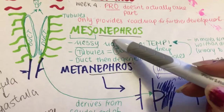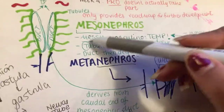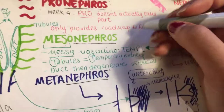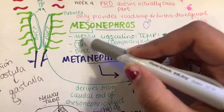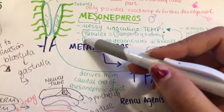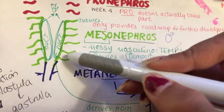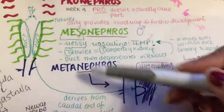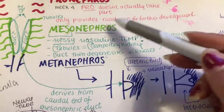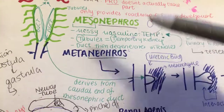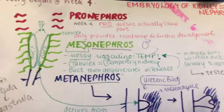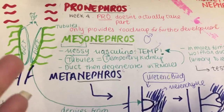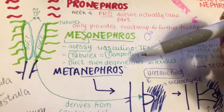Then you have the meso-nephros — a messy, masculine, temporary character. The meso-nephros has two parts: ducts and tubules. Those are its structural components. This messy, masculine character says he'll be your temporary guide — meaning the meso-nephros does actually function as a kidney, but only temporarily.